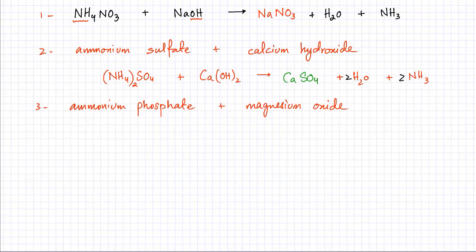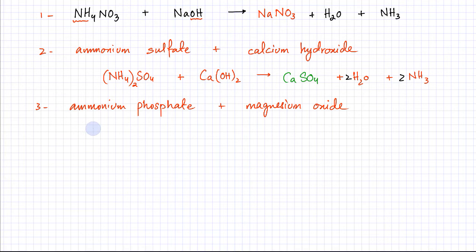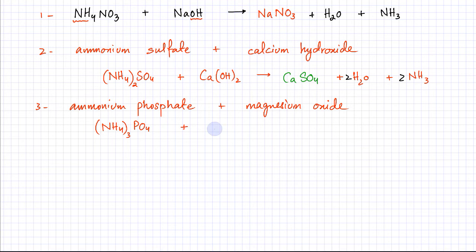In the third reaction, ammonium phosphate reacts with magnesium oxide — a metal oxide, so that's a base. NH4 has a charge of +1 and PO4 is 3-, so the formula of ammonium phosphate is (NH4)3PO4 — there would be 3 ammonium ions. Mg is 2+, O is 2-, so magnesium oxide is MgO. It's going to produce a salt, water, and ammonia gas.